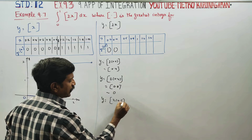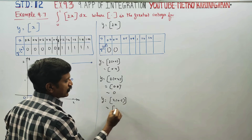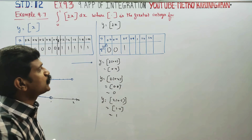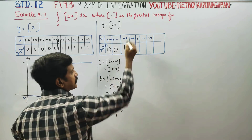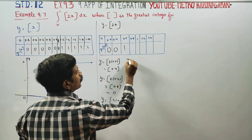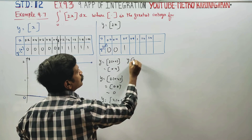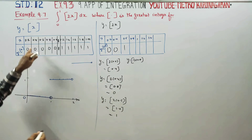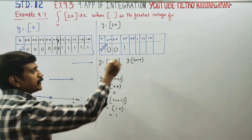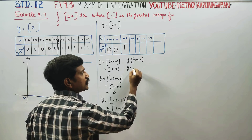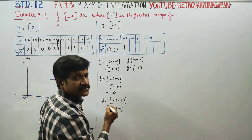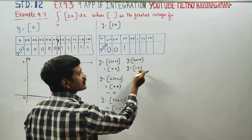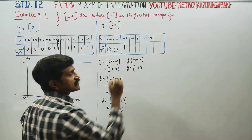For x = 0.5: y = GIF(2 × 0.5) = GIF(1), and the integer value is 1, so the answer is 1. For x = 0.8: y = 2 × 0.8 = 1.6. The nearest integer less than or equal to 1.6 is 1, therefore the answer is 1.